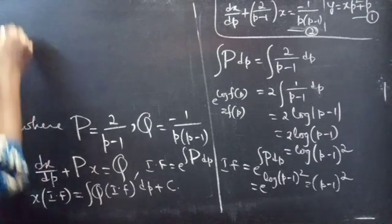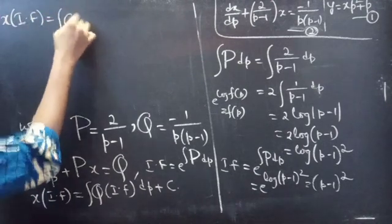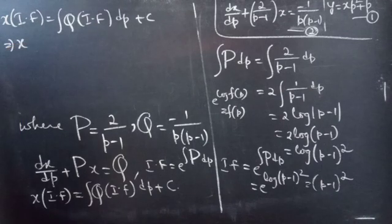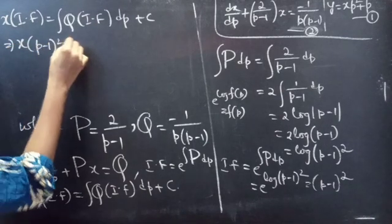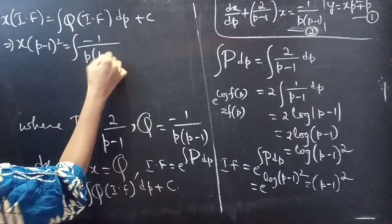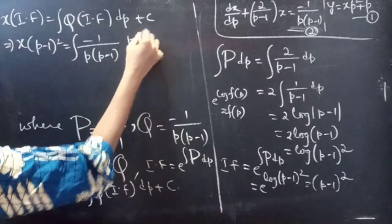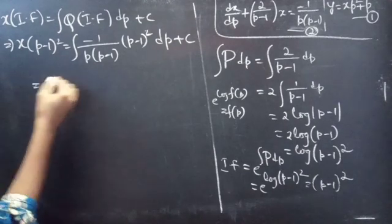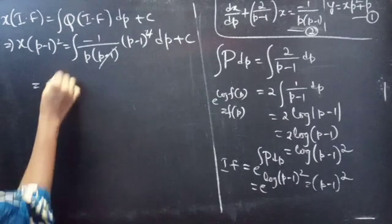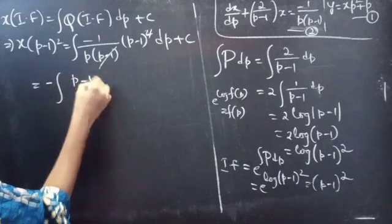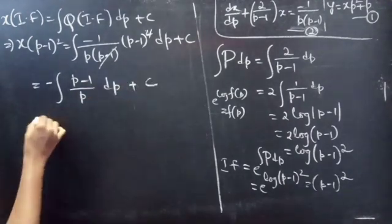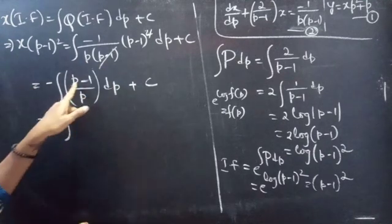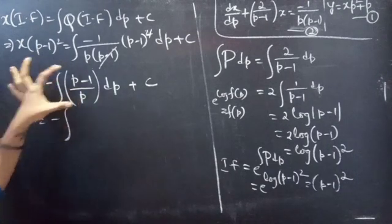Now applying the general solution formula: x·(integrating factor) = ∫Q·(integrating factor) dp + c. So x·(p−1)² equals ∫[−1/(p(p−1))]·(p−1)² dp + c. One factor of (p−1) cancels in the integrand, giving ∫−(p−1)/p dp + c.